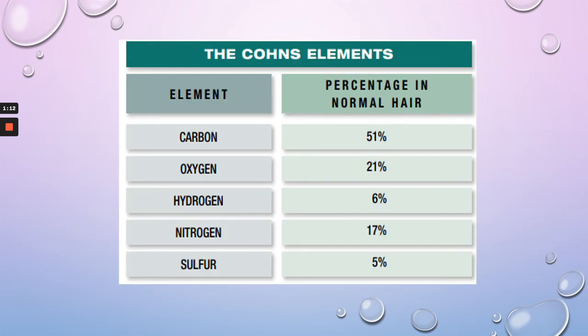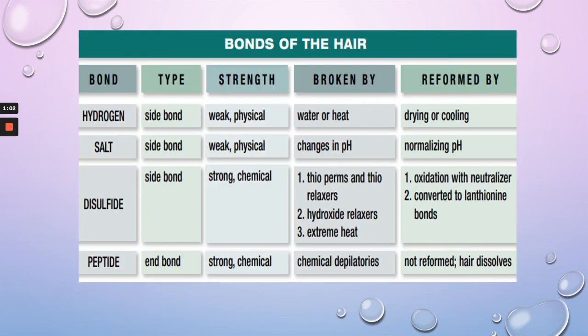Here are the elements of the hair and also the percentages, just in case you have a question on your exam about what the percentage of hydrogen is. Here is a quick reference chart for the bonds of hair — we have the types, the strength, how they're broken, and how they're reformed. Let's look at flat irons as an example. The hydrogen bonds are broken by heat and are reformed when the hair is cooling. We often make several passes because we're looking for the degree of straightness when flat ironing hair — but let the hair cool down a little bit and let those hydrogen bonds reform.